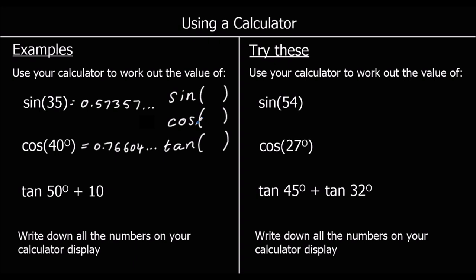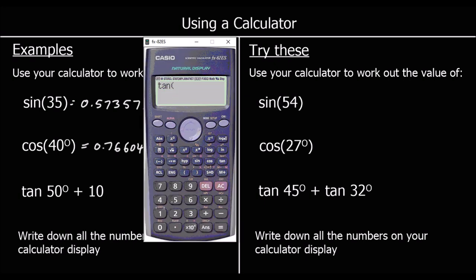The last one: tan 50 degrees. Again, we're not typing the degrees symbol into the calculator. So tan 50 — that's the angle, so it goes in the brackets. We close the brackets before we plus 10. So that's 11.19175 and so on.